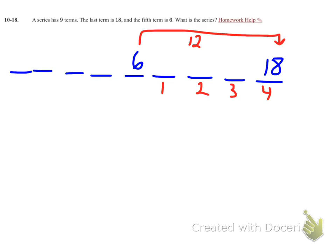So it's adding the same number 4 times, and it's going up 12. That means it has to be adding 3 each time. So 6, we have 9, 12, 15, and 18.